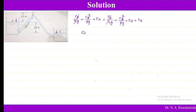So ZA minus ZB equals HF. Taking B as the datum, ZB is 0 and ZA is 20. Therefore 20 equals HF, which equals 4fLV squared divided by 2gD.